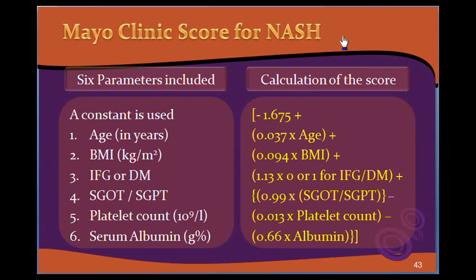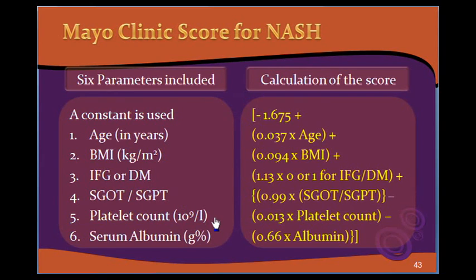This is the most comprehensive clinical score, developed in 2008 for NASH. Six parameters are included: age in years, BMI in kg per meter squared, impaired fasting glucose or diabetes mellitus (yes or no), SGOT to SGPT ratio, platelet count in 10 to the power of 9 per litre, and serum albumin in grams per cent.